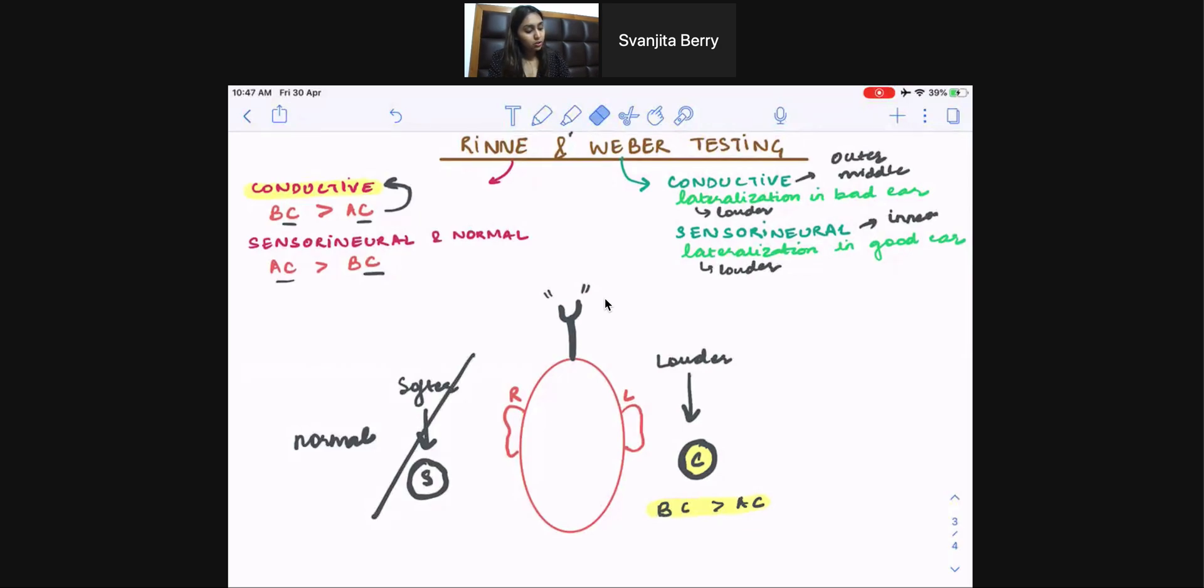So I go back to this patient. Let's say I do my Rinne testing in my left ear to rule out conductive hearing loss. But what I actually get is air conduction is greater than bone conduction. This means I have to reject conductive hearing loss in this ear, because my air conduction is greater than bone conduction. So I reject conductive hearing loss in my left ear.